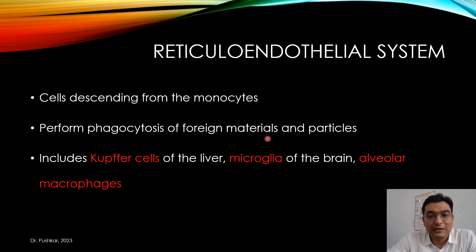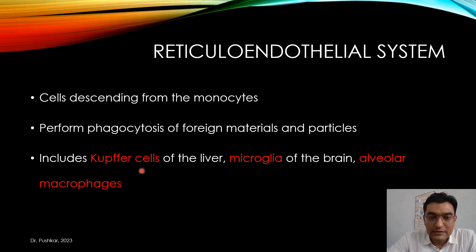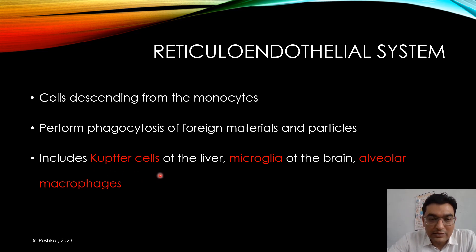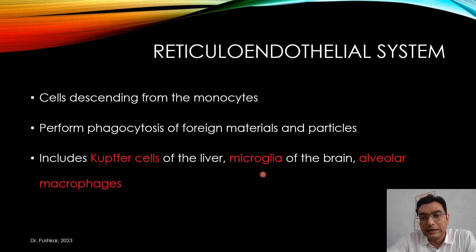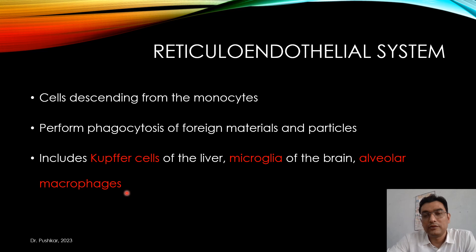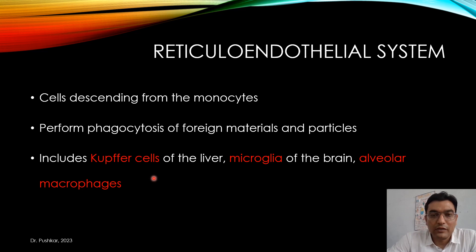The reticuloendothelial system includes the Kupffer cells in the liver, microglia in the brain, and alveolar macrophages in the lungs. Whatever foreign particle tries to enter our body, these reticuloendothelial cells protect us by phagocytosing them.